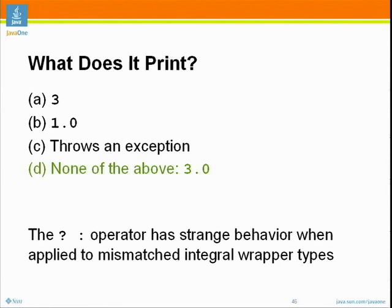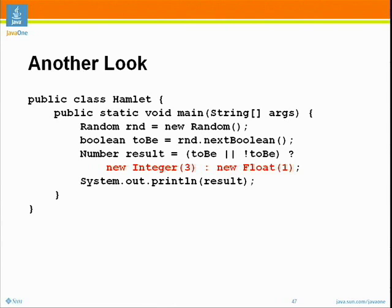It prints 3.0. Three dot zero? Yes, and that wasn't even in the program. The problem is the ternary operator has very strange behavior when operating with mismatched integral wrapper types. Here we have an Integer object and a Float object — they're both object references. It's going to take these and, since they're wrapped primitive types, it's not simply choosing either this pointer value or that pointer value — it's doing what it would do if you had a ternary with an int and a float, converting them to whatever type is more general than both.